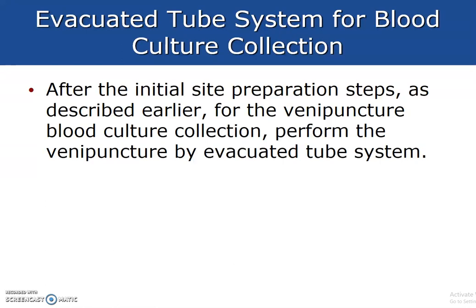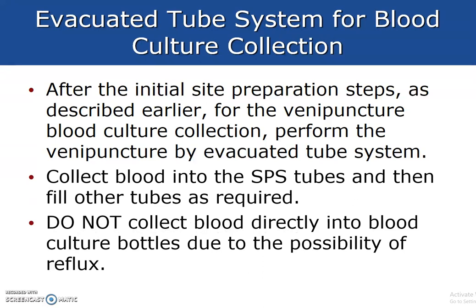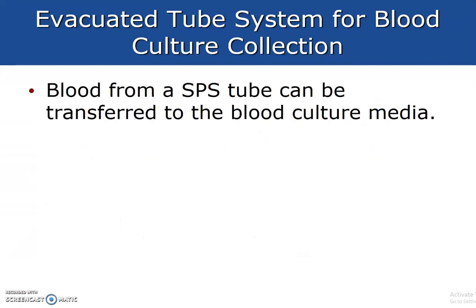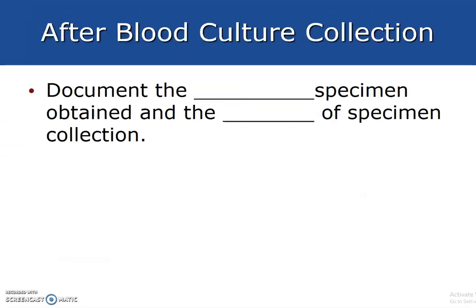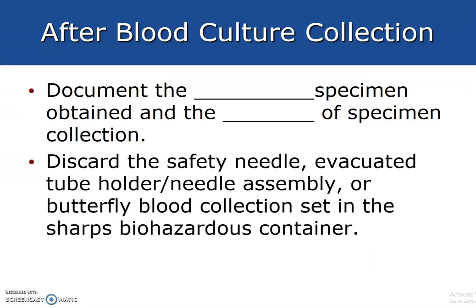After the initial site preparation, the venipuncture culture collection is performed using an evacuated tube system. Collect blood into the SPS tubes and fill other tubes as required. Document the type of specimen obtained, the amount, and the time of specimen collection. For blood culture bottles, if you get two sets, space them 15 minutes apart and document the amount of specimen obtained — for example, 5 mls or 10 mls — and record the time. Discard the safety needle, evacuated tube holder, needle assembly, or butterfly blood collection set in the sharps container.